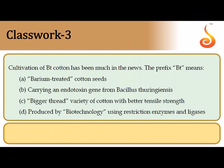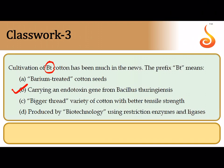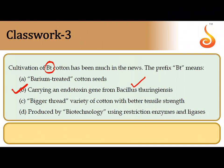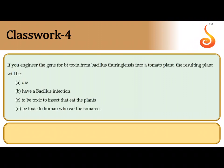The third question says: cultivation of BT cotton has been much in the news — what does the prefix BT mean? The prefix BT refers to the source of the gene, which is Bacillus thuringiensis. It carries a gene for an endotoxin. This bacteria produces a protoxin which is activated in the gut of the insect and destroys it. So the correct answer is option B.